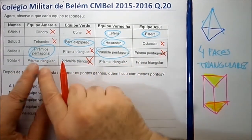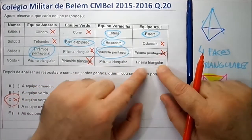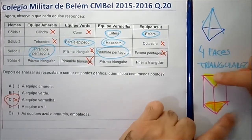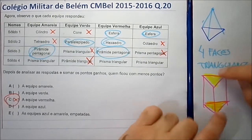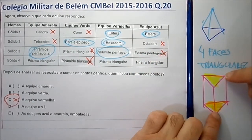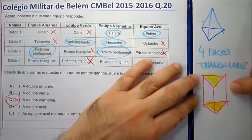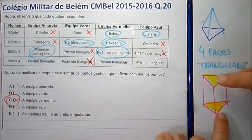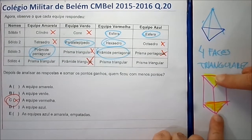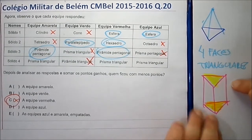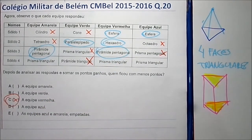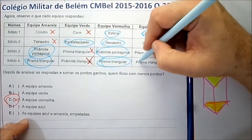As equipes que responderam prisma triangular: o prisma triangular tem duas bases triangulares e três faces laterais retangulares. Realmente, ele tem apenas duas faces triangulares — as outras são retângulos. O prisma triangular é um poliedro com exatamente duas faces triangulares. Quem respondeu prisma triangular acertou.